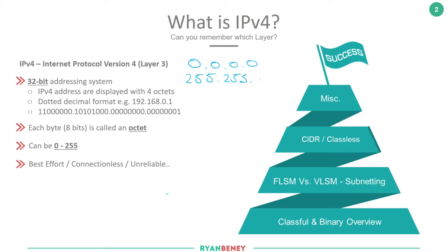We also consider IP as a protocol that is best effort, connectionless, and unreliable. You may be wondering: if the internet uses IP, how do we have any form of reliability across networks today? The reason is that when we talk about networking as a whole, we talk about reliability being provided by upper layer protocols.